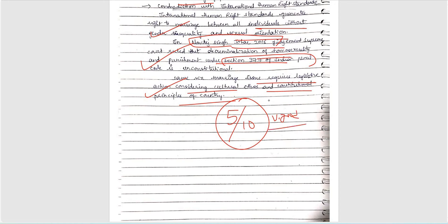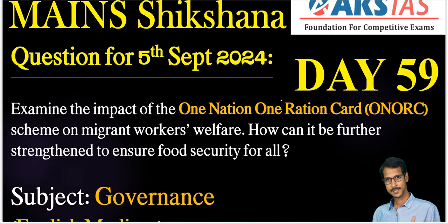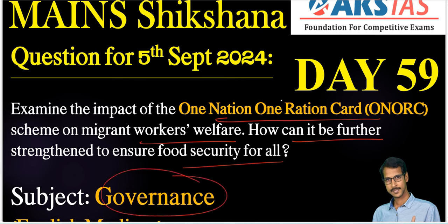Keep improving by observing the suggestions provided here. Next, coming to the main section — Day 59, question for 5th September 2024: Examine the impact of the One Nation, One Ration Card scheme on migrant workers' welfare. How can it be further strengthened to ensure food security for all? This is related to the governance subject. Write your answers and upload in the AKS app.